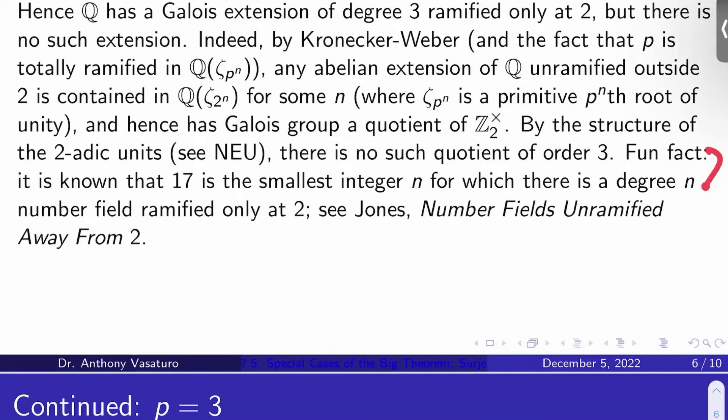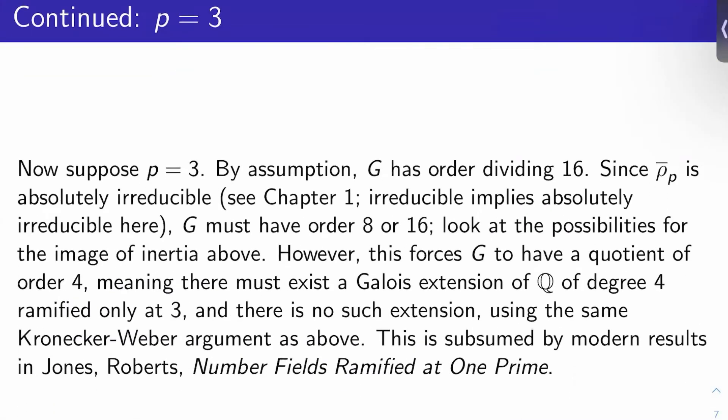Well, that means its Galois group is a quotient of Z2 cross, where Z2 is the 2-adic integers. But we know the structure of the 2-adic units. Basically, there's no such quotient here of order 3, so we're done. In fact, it's now known that 17 is the smallest integer n for which there's a degree n number field ramified only at 2. You can see Jones' number fields unramified away from 2 for more information on that.